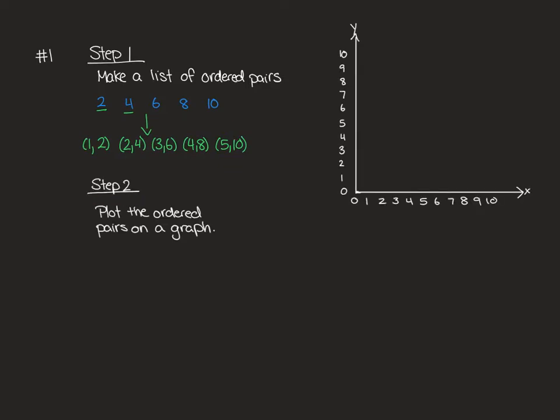Step 2 is to plot the ordered pairs on a graph. They'll give you a graph that's all set up and we need to fill in our ordered pairs. Our first point is 1 and 2. So we need to go to an x value of 1 and a y value of 2. I'm going to take my color and put my first point there. Then my next ordered pair is 2 and 4. Remember it's always x and then y. So I'm going to x 2, y 4.